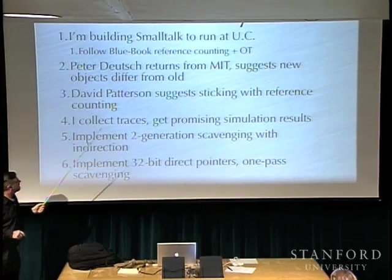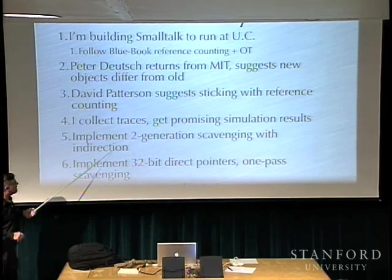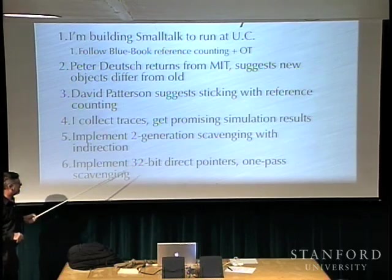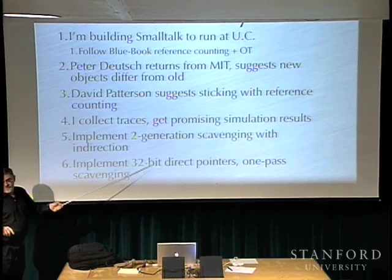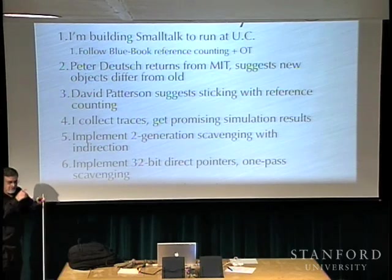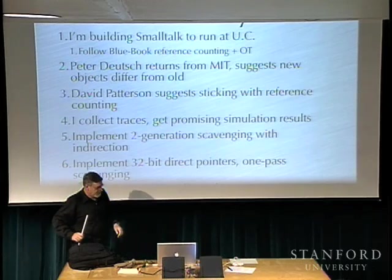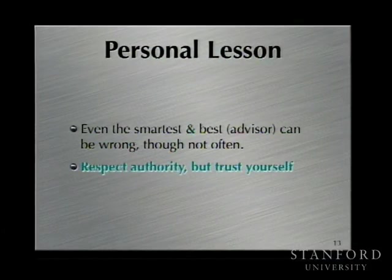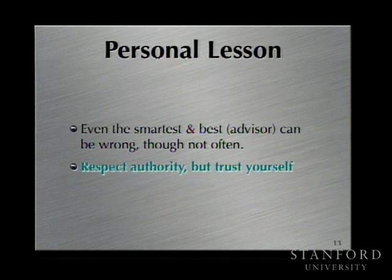Being me, I collected traces, got good simulation results, went ahead and implemented it — first with indirection, then with direct pointers and one pass. This was the first Smalltalk system without a level of indirection and with 32-bit pointers instead of 16-bit pointers. Here's what I learned: even the best, smartest advisor can be wrong. The lesson is: you respect the authority, but trust your own instincts and judgment. In other words, don't ignore your advisor all the time.